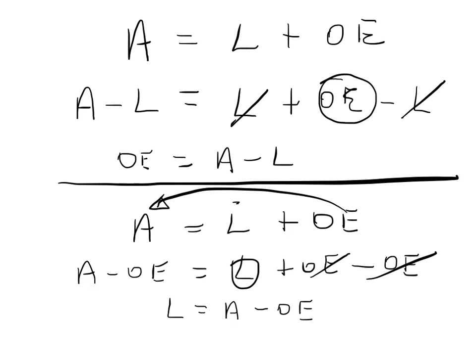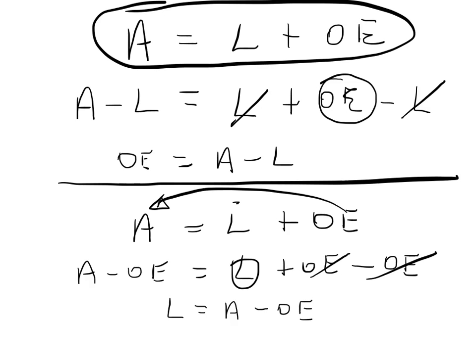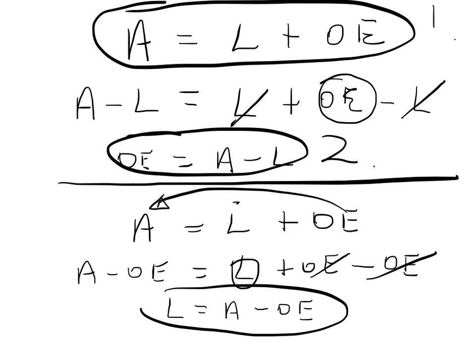So that is a quick demonstration of how we come up with the different forms of the accounting equation. There's one form, there's a second form, and there is our third form.